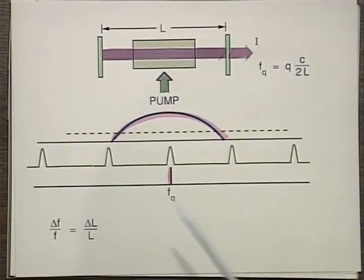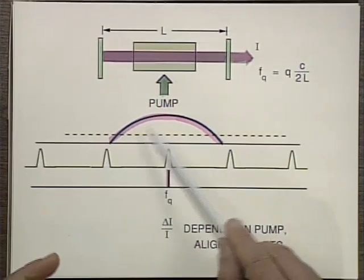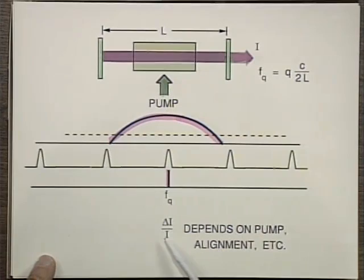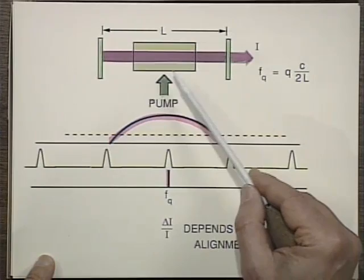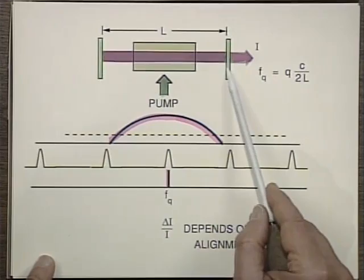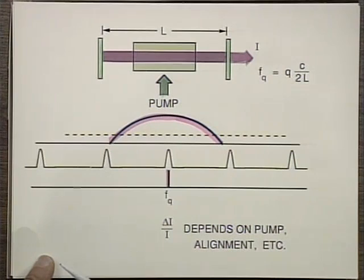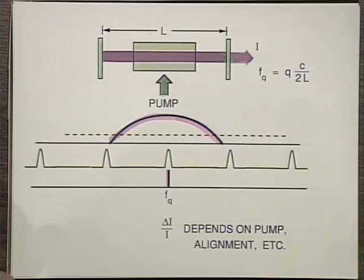The intensity of the laser is determined by the amplifier, but changes in the pump magnitude or mirror misalignment increase loss, requiring more gain to compensate, causing intensity to drop. To keep delta-I over I small, all these effects must be monitored. This brings us to the end of this session.